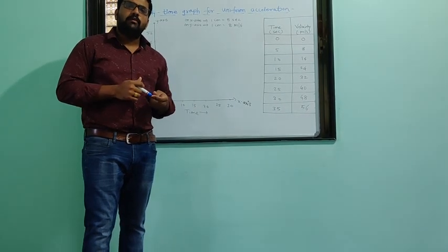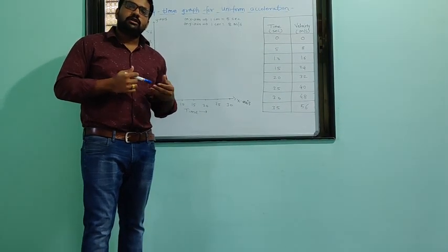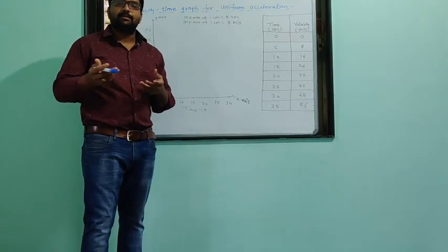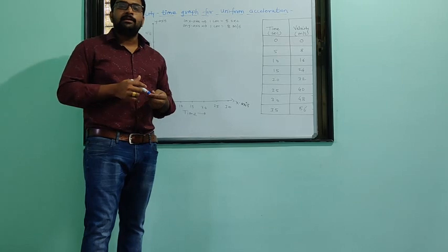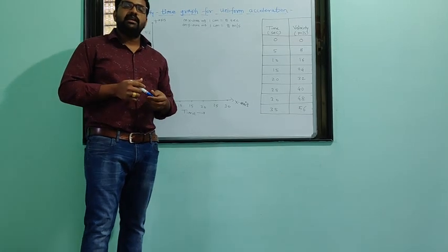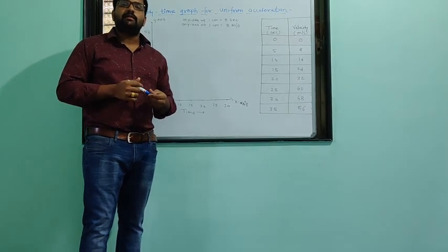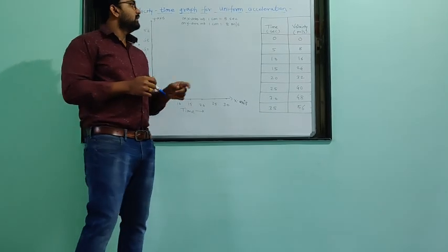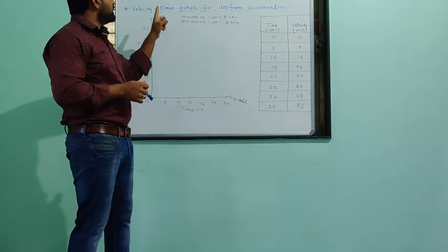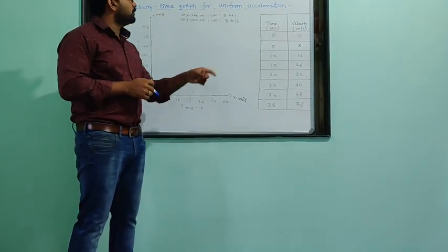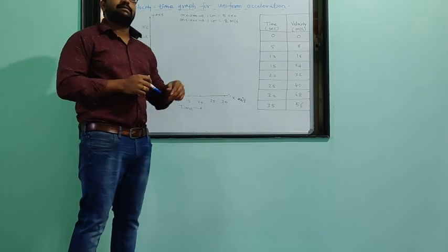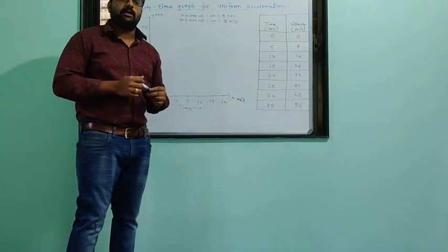We studied velocity-time graphs for constant velocity and for variable velocity. Now, the next topic: today we have to see the distance-time graph for uniform acceleration.